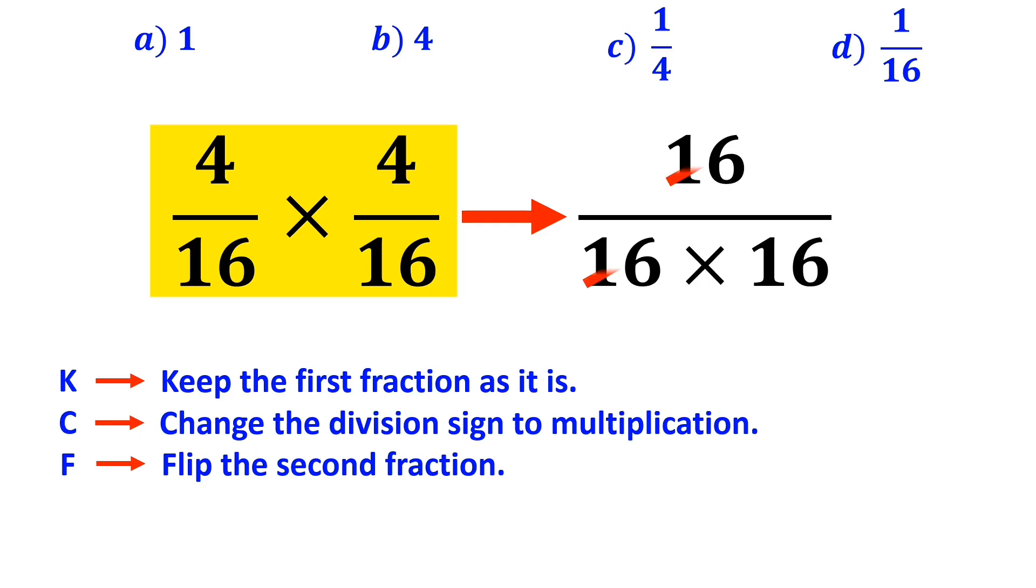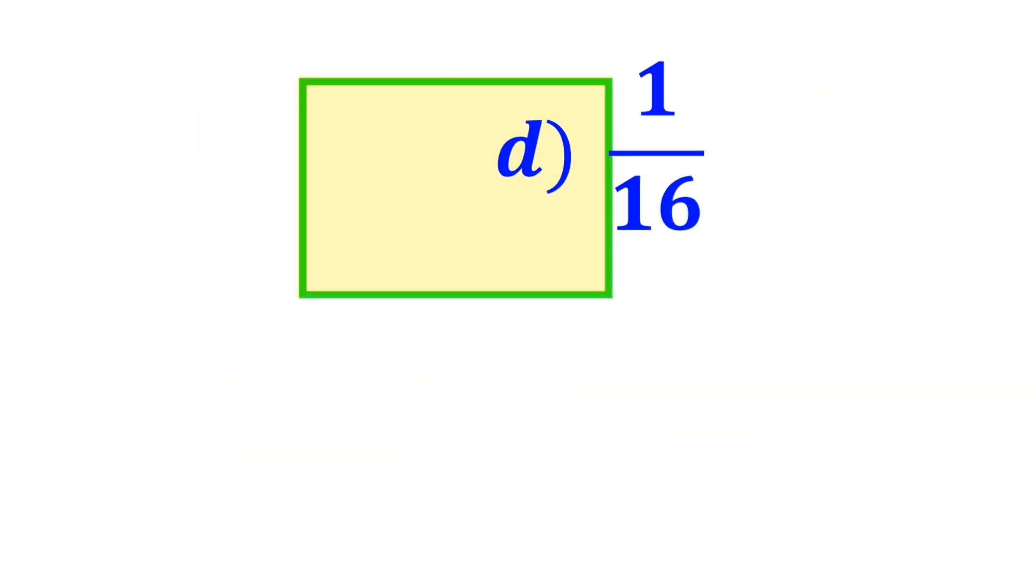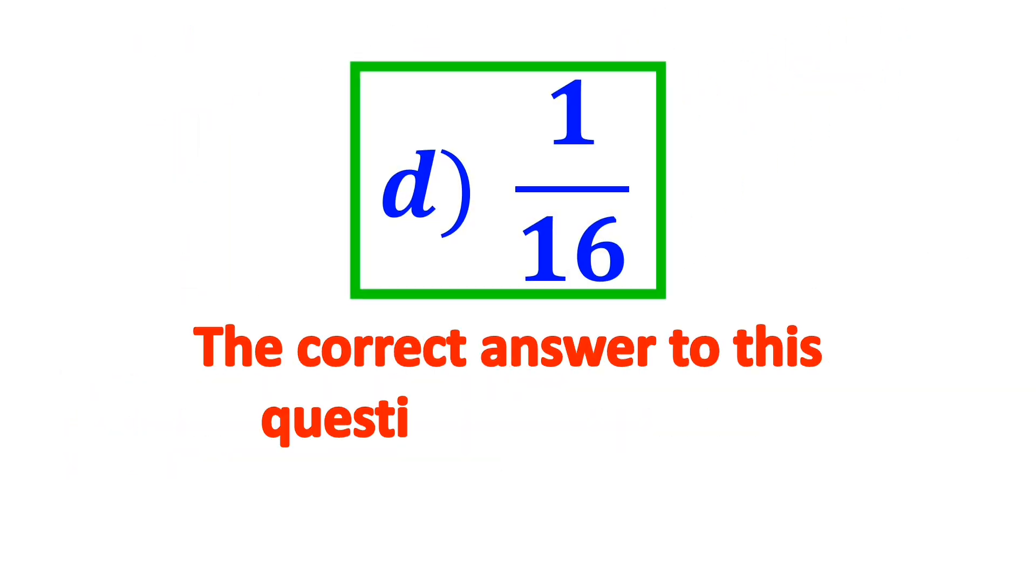Denominator 16 cancels out with one of the 16s in the numerator. And in the end, the full expression becomes 1 over 16. So, the correct answer to this question is option D.